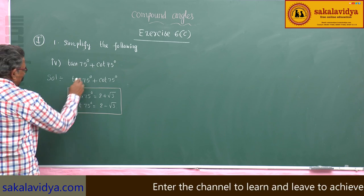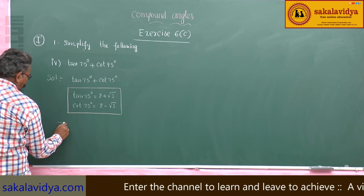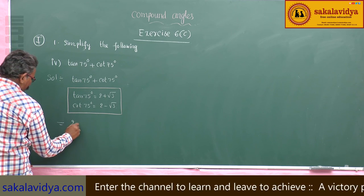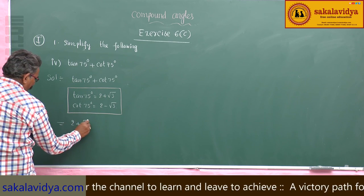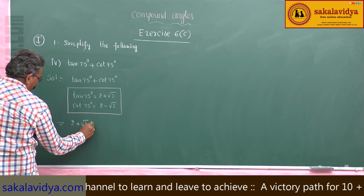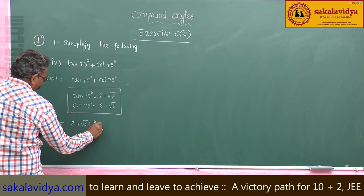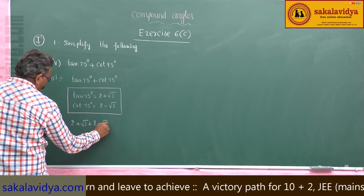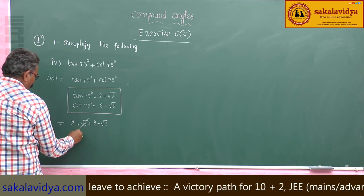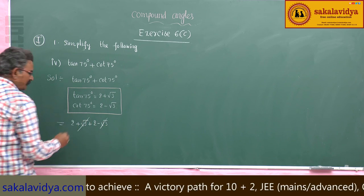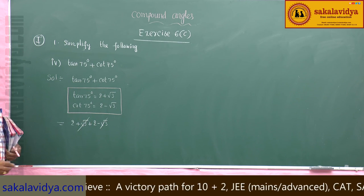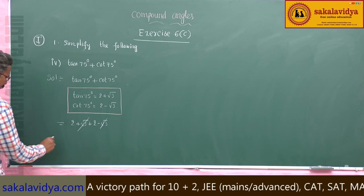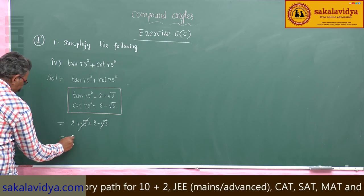So, this becomes 2 plus root 3, plus 2 minus root 3. The root 3 and minus root 3 cancel each other. So we get 2 plus 2, which equals 4.